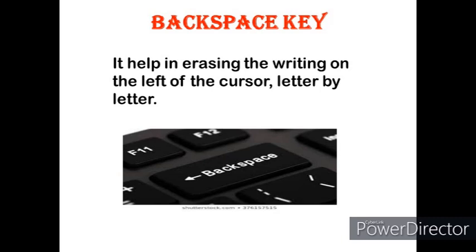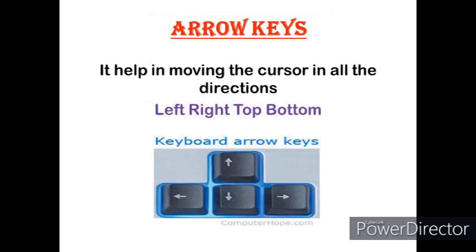When you type something from your keyboard and there is a mistake, or you want to erase it, you can use the Backspace key. Remember, it erases only toward the left side. Next is the Arrow key. This key helps you move your cursor in all directions — left, right, up, and down.